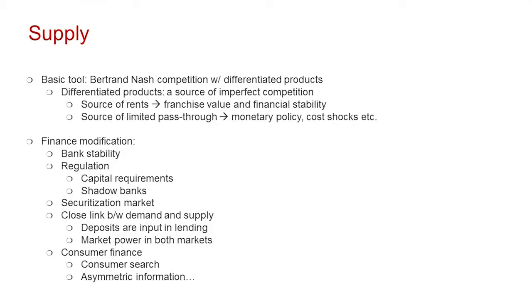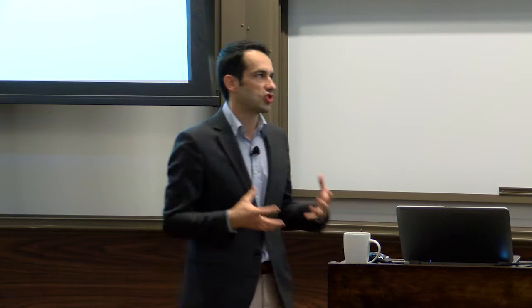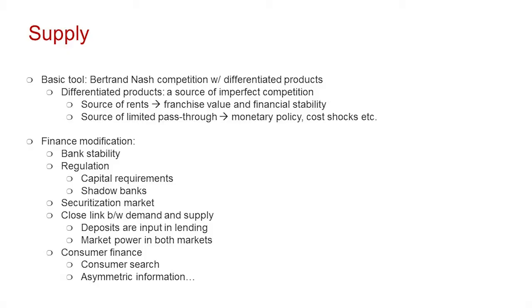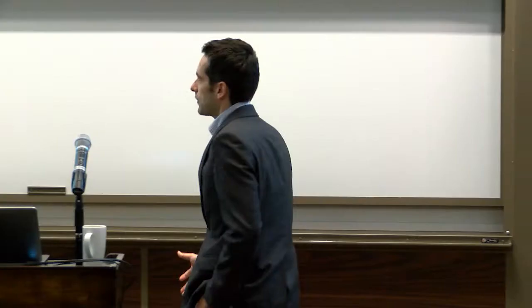On the supply side, I'll start with Bertrand Nash competition for differentiated products. With product differentiation, we have market power, which plays an important role on the supply side. First, it's a source of rents — and if you think about franchise value as the reason banks stay alive, franchise value is an accumulation of rents from market power in the future. Second, market power is a source of limited pass-through. There's a reason why we don't pass cost shocks from monetary policy through to consumers, and that's market power.